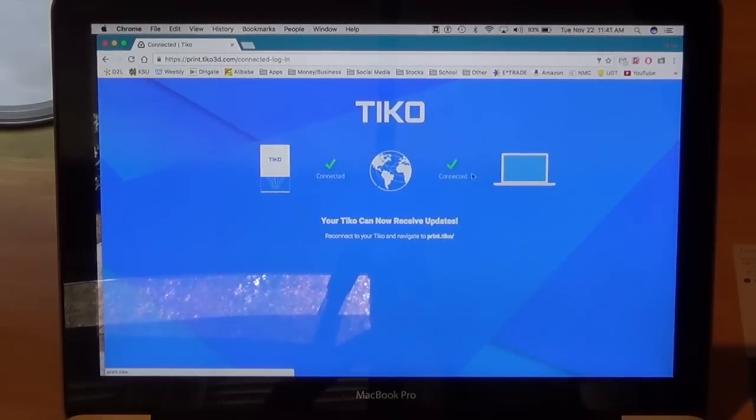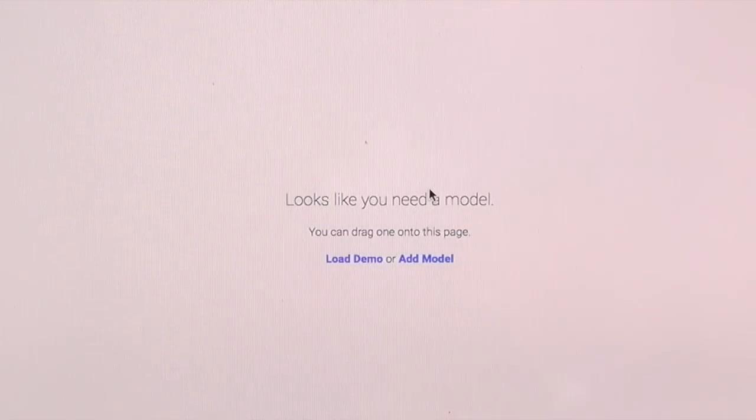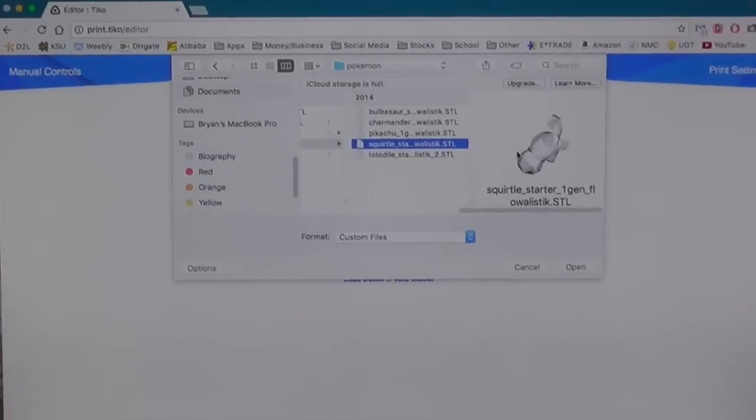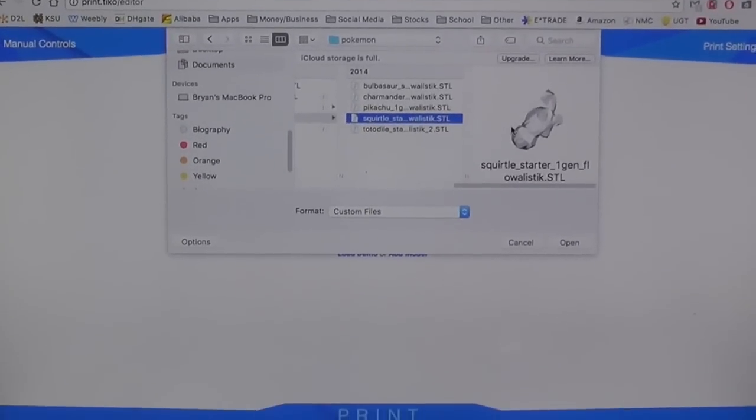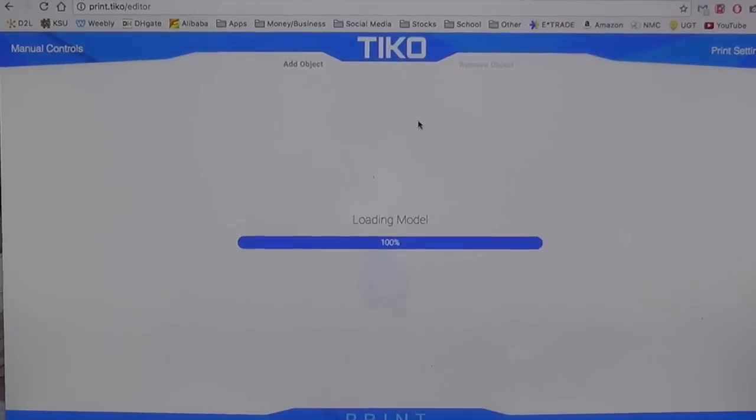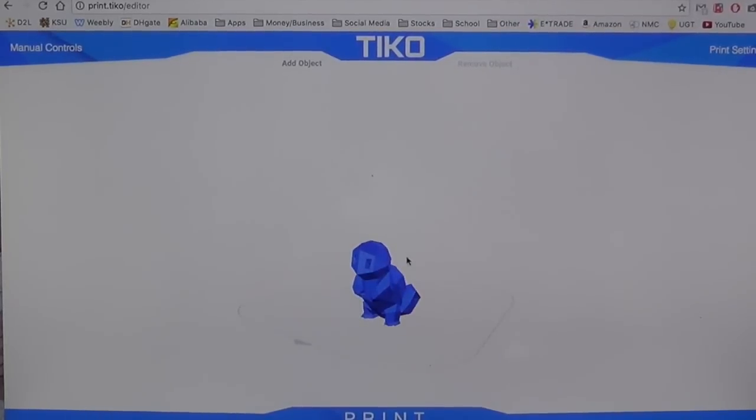We're just going to click start here. Let's add an object. For this demo I'm going to go ahead and just print, let's see, let's do Squirtle here. STL file, there he is popping up on our interface.